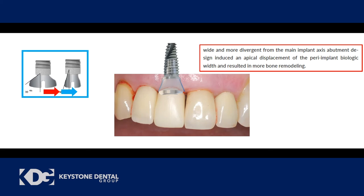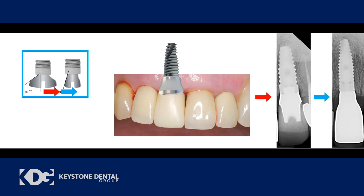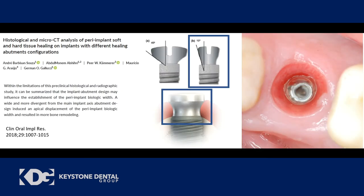The answer is a concave design: coming up off the connection with a concave shape creates more space for soft tissue and biologic width development, then transitioning out to the proper emergence profile as we exit the free gingival margin. This supports healthy circular gingival fibers without inflammatory response, and healthy hemidesmosomal attachment that is strong because it's compressed by healthy gingival fibers. All of this leads to a reduction in inflammation.